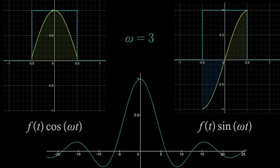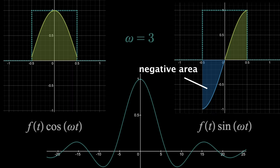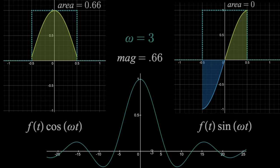Now the Fourier transform says find the area under these curves and just get the magnitude from there. Since areas beneath the x-axis are negative, then the plot on the right has an area of zero. The region on the left has an area of about 0.66, and the magnitude of these is of course 0.66, no Pythagorean theorem needed when one side is zero. Which means at omega equals 3, the magnitude of the Fourier transform is 0.66.